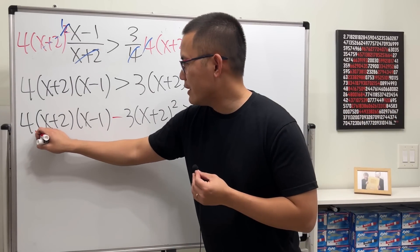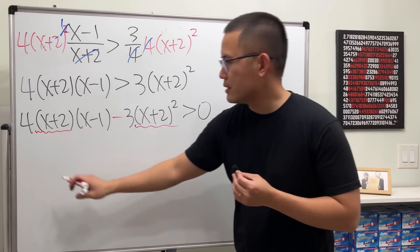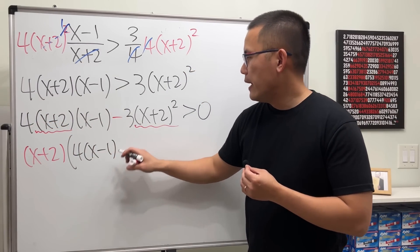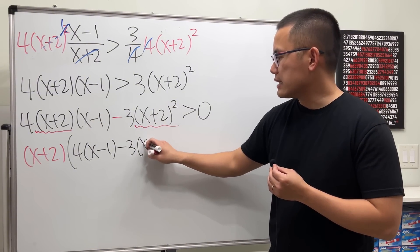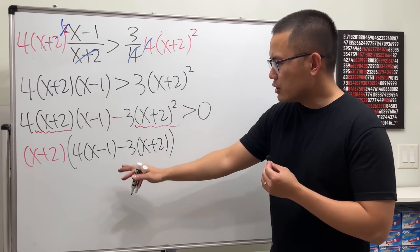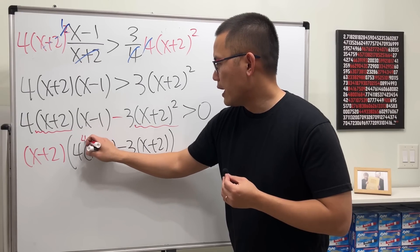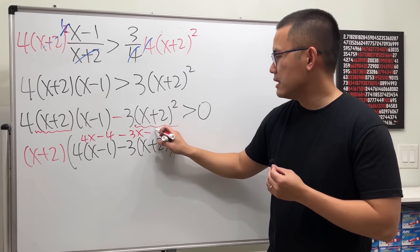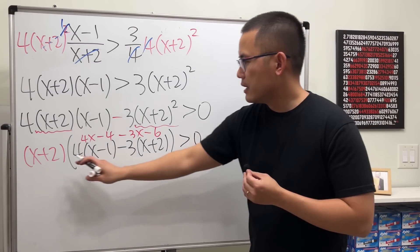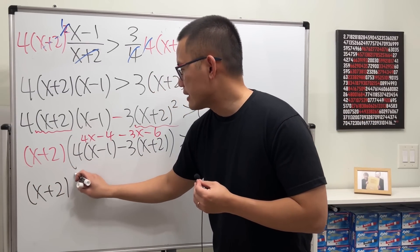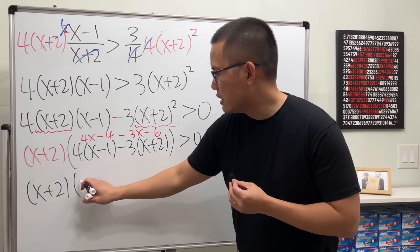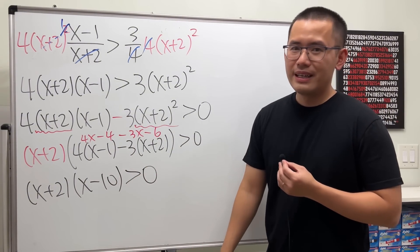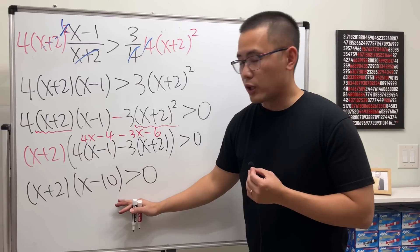We see that x plus 2 is a common factor, so we factor it out. Inside the brackets we have 4 times x minus 1 minus 3 times x plus 2, which expands to 4x minus 4 minus 3x minus 6, giving us x minus 10. So the inequality becomes x plus 2 times x minus 10 greater than zero.